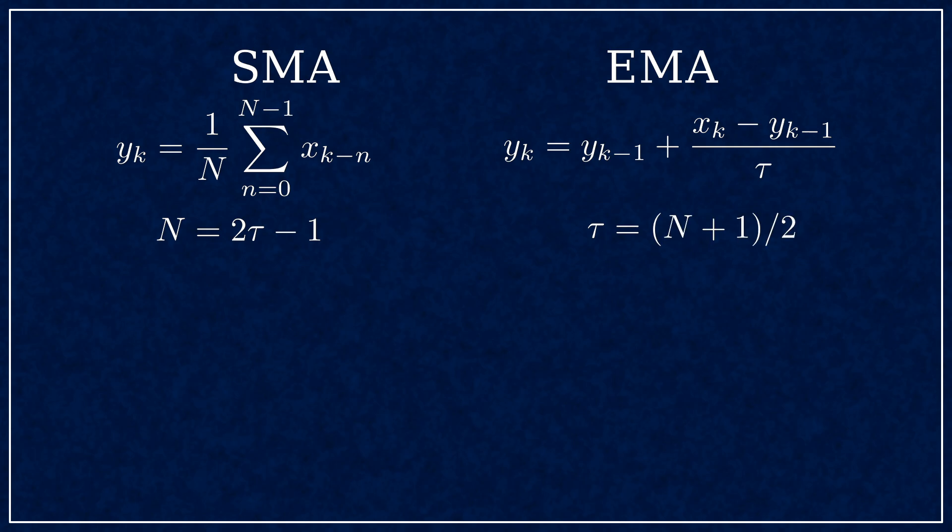This is done by setting the discrete time constant of the EMA as n plus 1 over 2, n being the number of samples averaged for the SMA. So for averaging 5, the equal time constant is 3.